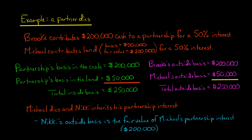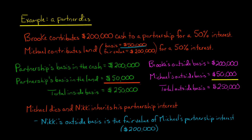Initially, the partnership's basis in the cash is going to be $200,000 — that's what it got from Brooke. And then its basis in the land is going to be $50,000, because that was the basis in the land to Michael. So the total inside basis for the partnership is $250,000 initially.